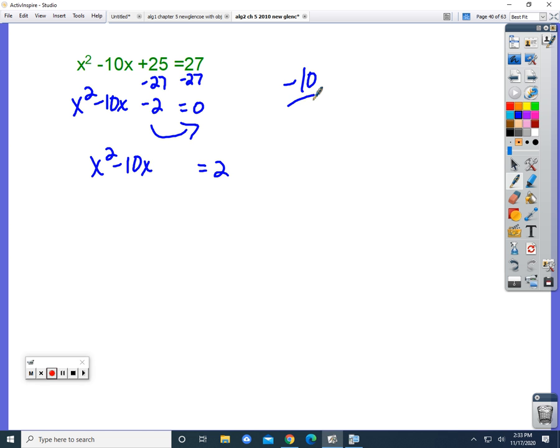So take your negative 10, divide it by 2, and then square it. So we're going to add 25 here, 25 here. And looks like we're back to where we started from here. So I'm going to clean up that side. Factor.